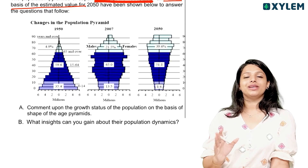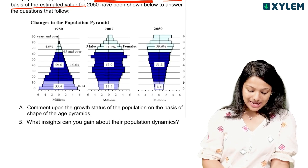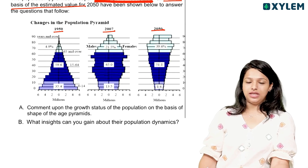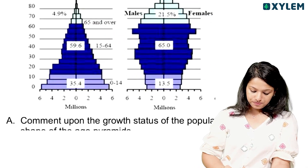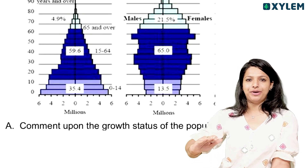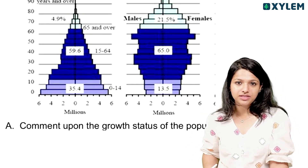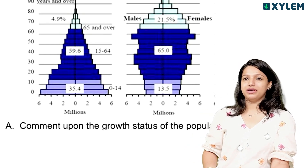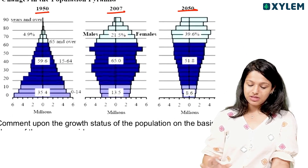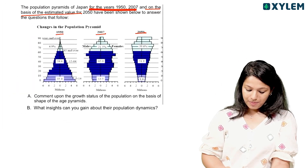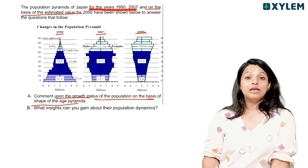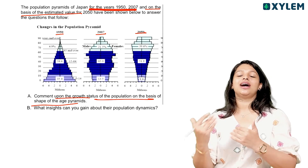Japan's population data is given for 1950, 2007, and estimated population for 2050. We need to look at and compare the pyramids representing the pre-reproductive, reproductive, and post-reproductive age groups. We need to compare these three age pyramids and comment upon the growth status of the population on the basis of the shape of the age pyramid.